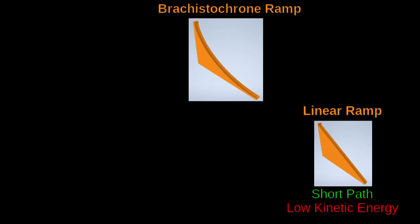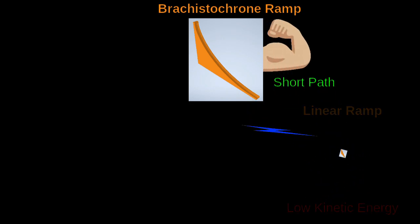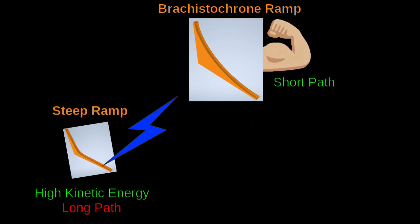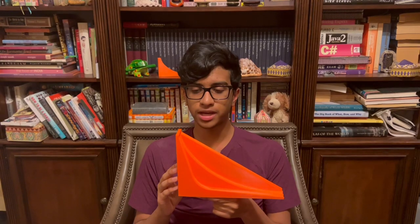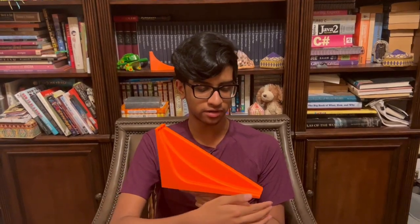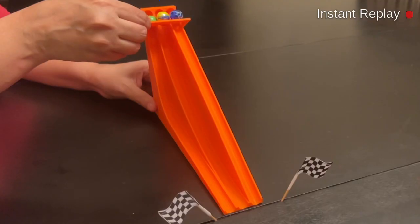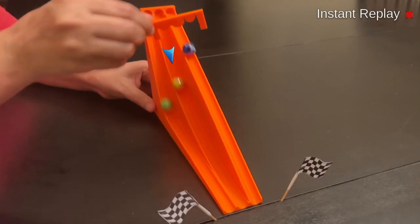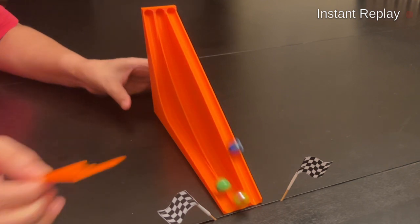On the contrary, the brachistochrone ramp strikes the perfect balance between the linear ramp's short path and the steep ramp's rapid surge in kinetic energy. The brachistochrone optimizes its gain of kinetic energy because of its special cycloid curve. At every point along the brachistochrone curve, the marble gains enough kinetic energy to reach the next point in the shortest time possible.